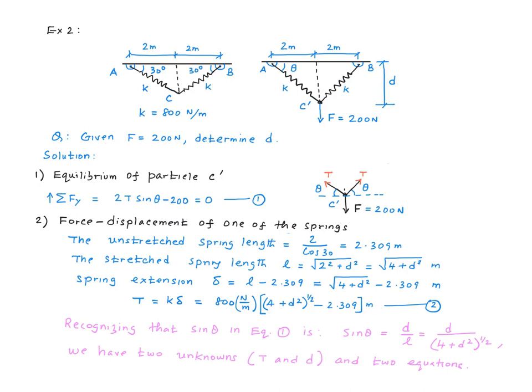Can we solve this? First we know that sine theta is D over L. But L is square root of 2 squared plus D squared. Therefore sine theta is actually a function of D. In this equation, we basically have two unknowns, T and D.